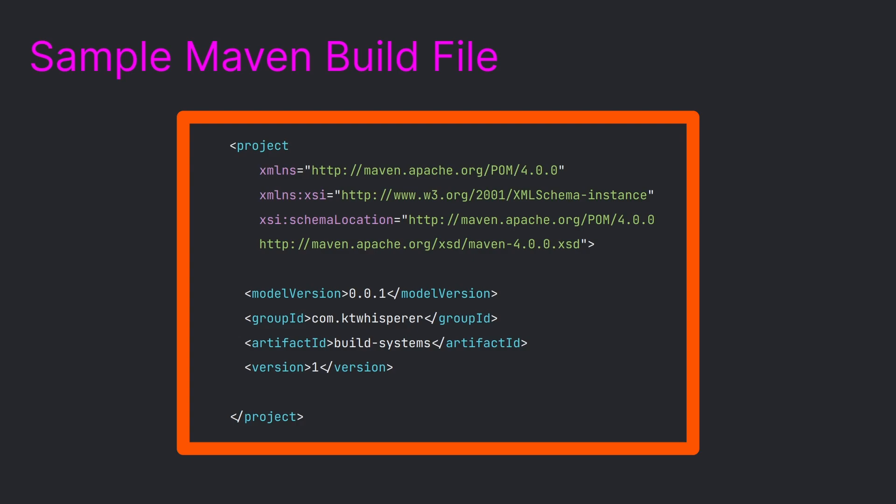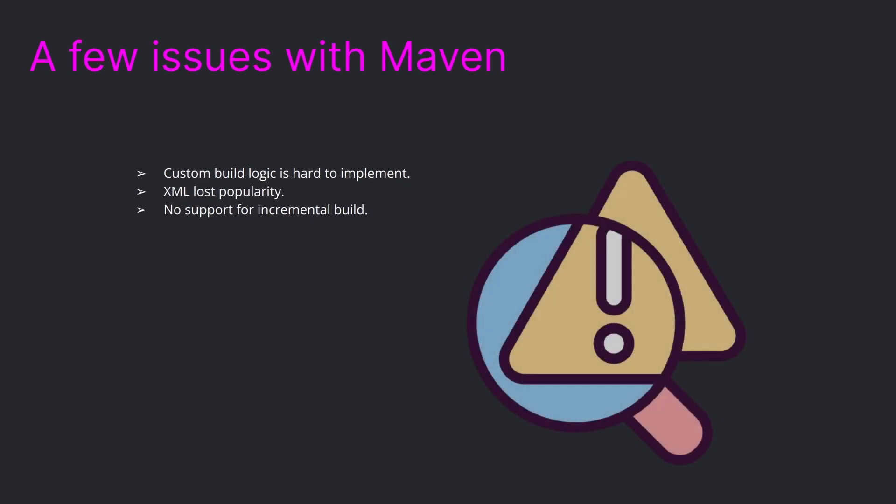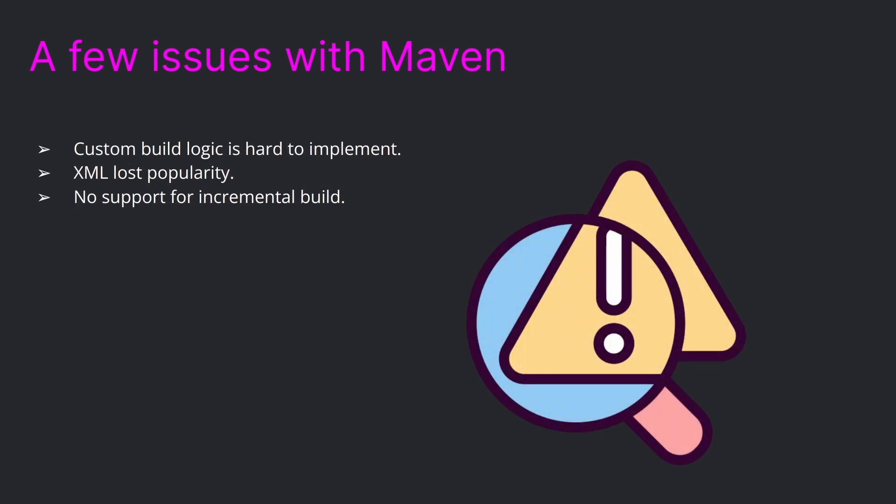However, there are several issues with Maven. First, you cannot define custom logic in a simplistic manner — it is very hard to implement custom build logic within Maven scripts without a custom plugin. Maven builds are defined using XML files, and XML has lost a lot of popularity as people now prefer more functional languages for build logic. Maven also lacks support for incremental builds — a model where products are designed, implemented, and tested incrementally with more added until the product is finished.